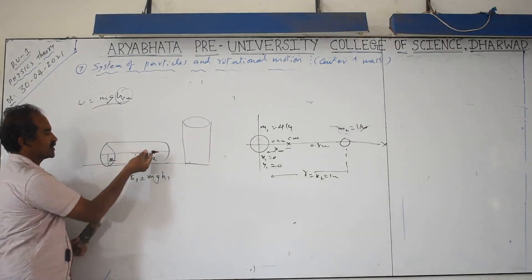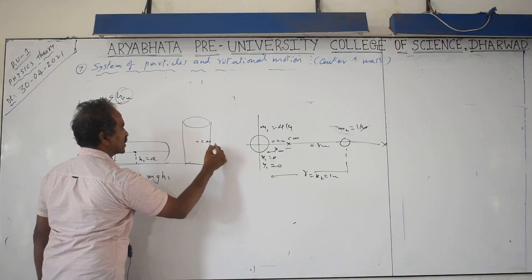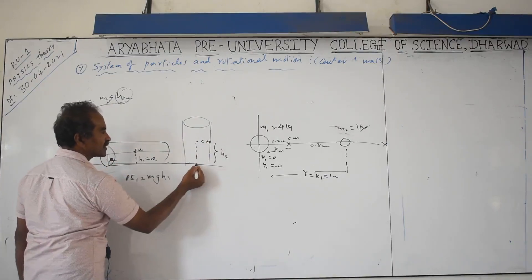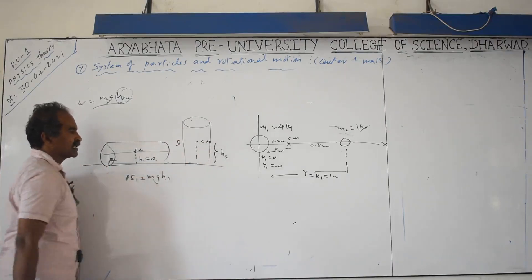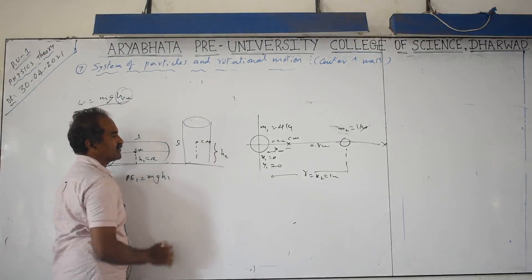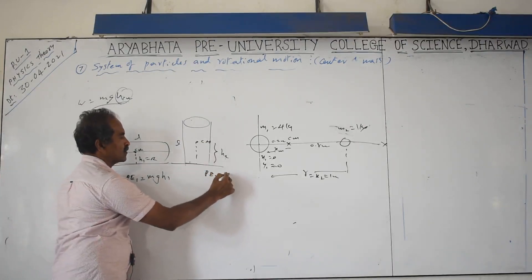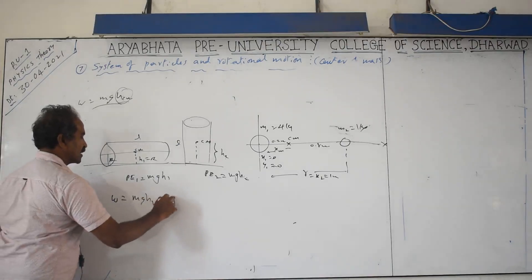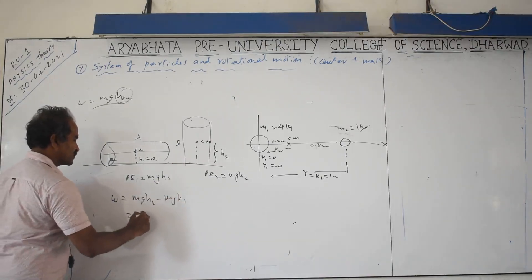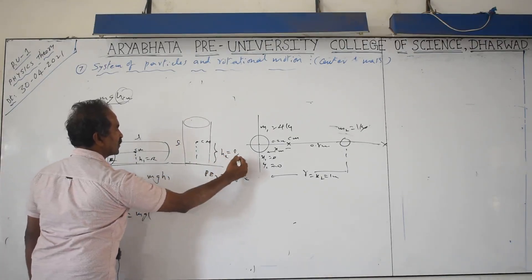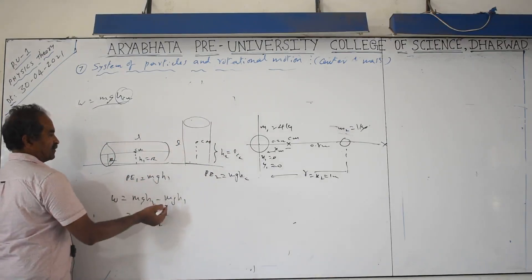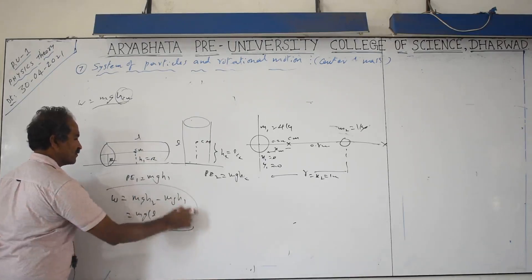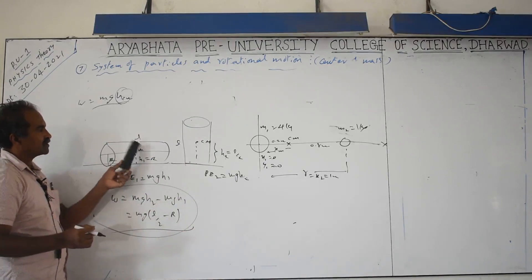When you make the rod vertical, the center of mass rises to h2 = L/2 (half the length for a symmetrical body). Work done = change in potential energy = mg(h2 - h1) = mg(L/2 - r). This is the work done to make that cylindrical rod stand vertically on the ground.